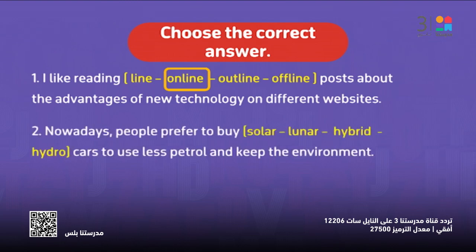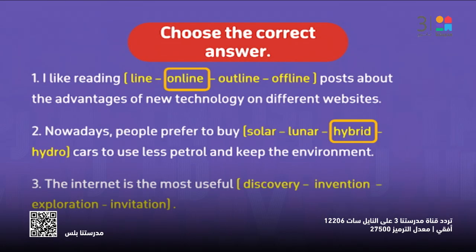Nowadays, people prefer to buy ___ cars. The options are: solar, lunar, hybrid, or hydro. Of course, the answer is hybrid cars. Hybrid cars are cars that move by two things — either electricity or petroleum.